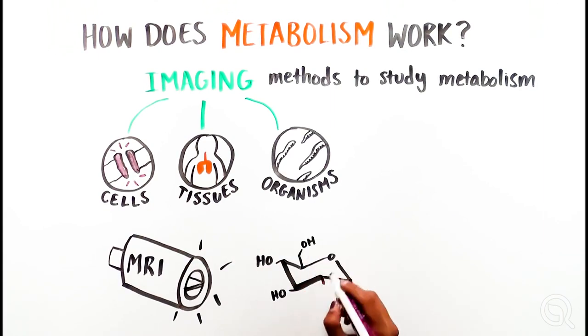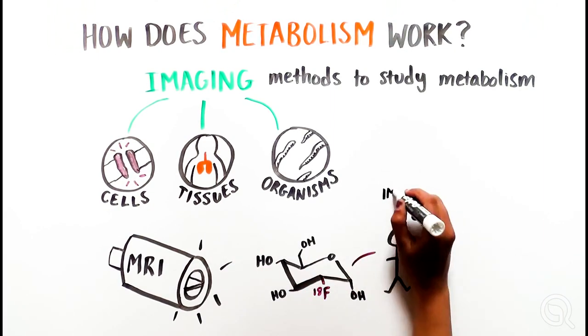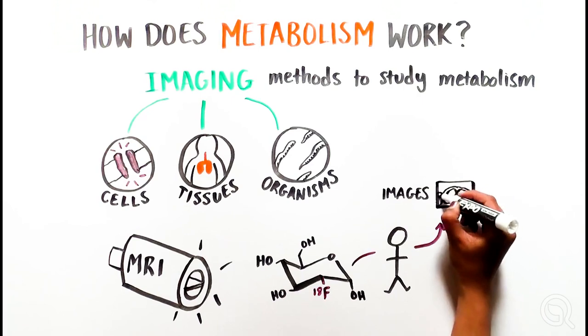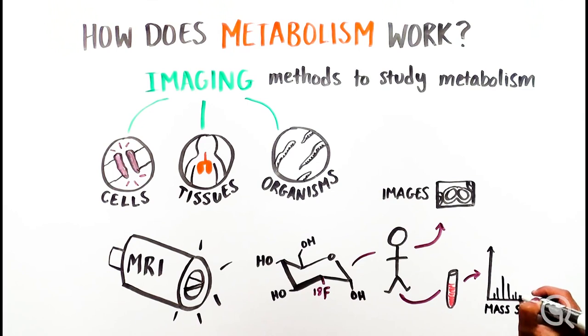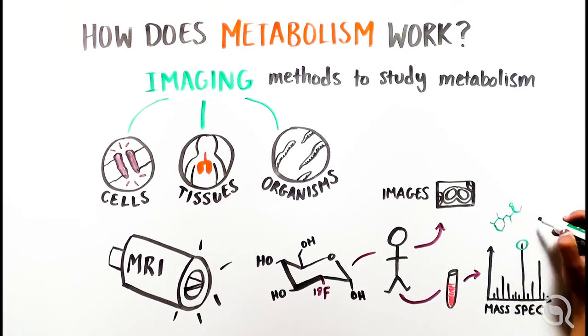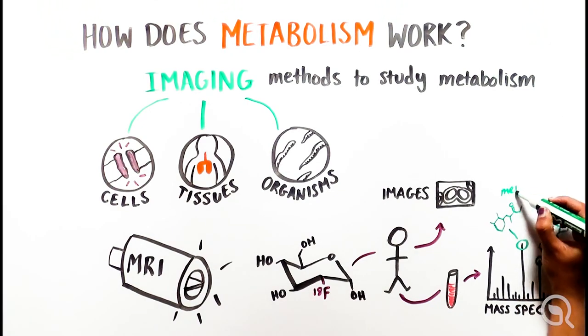We can also extract cells and tissues from these organisms, and use methods such as mass spectrometry to provide even more information on a huge number of metabolites that our bodies make from food.